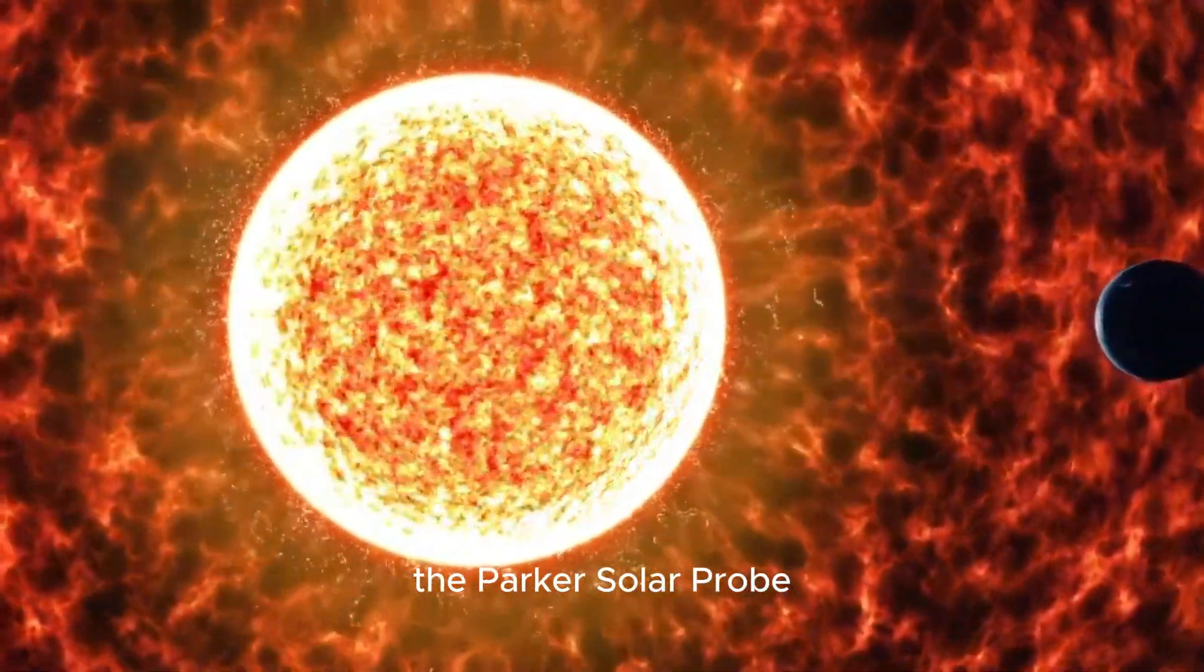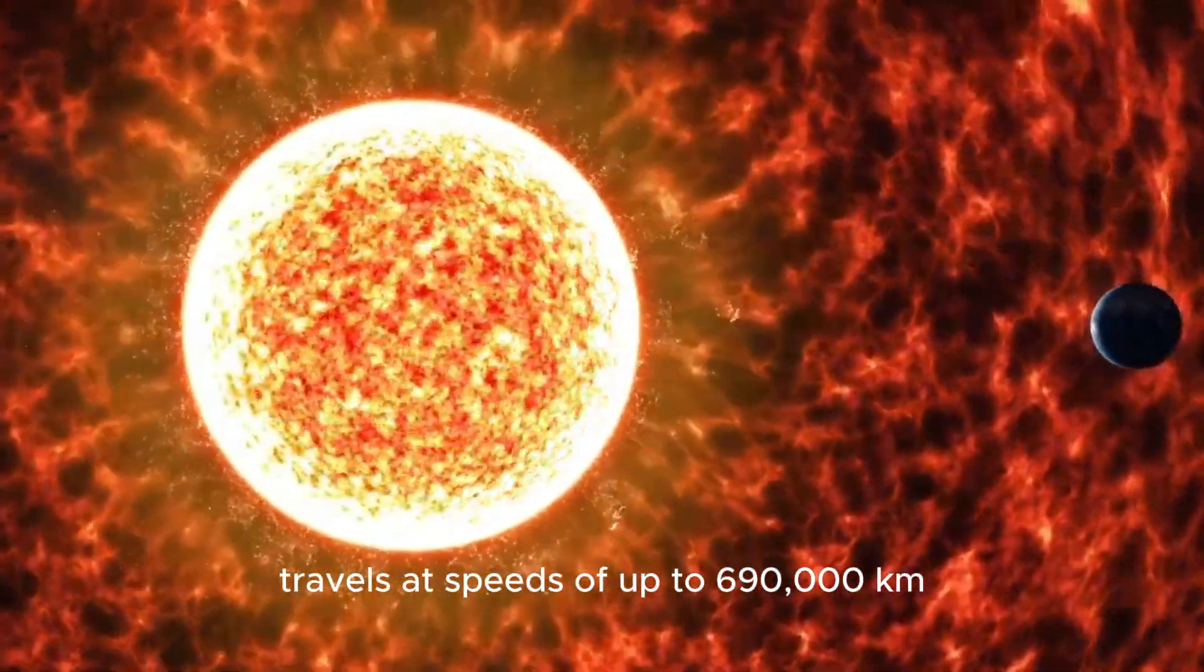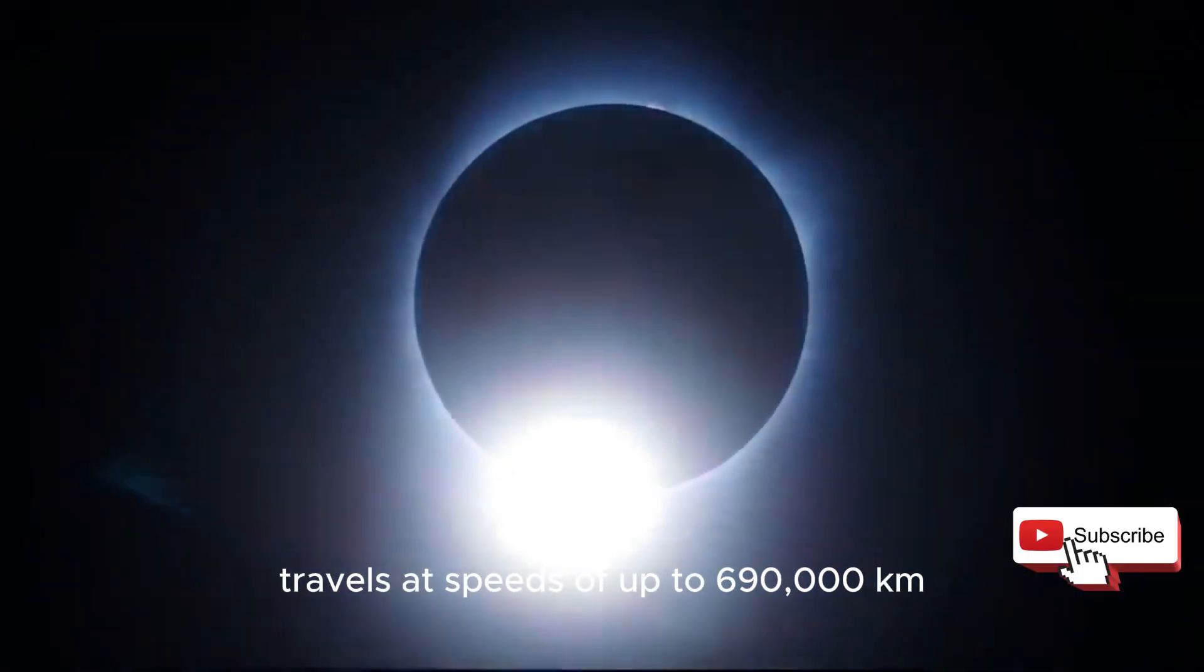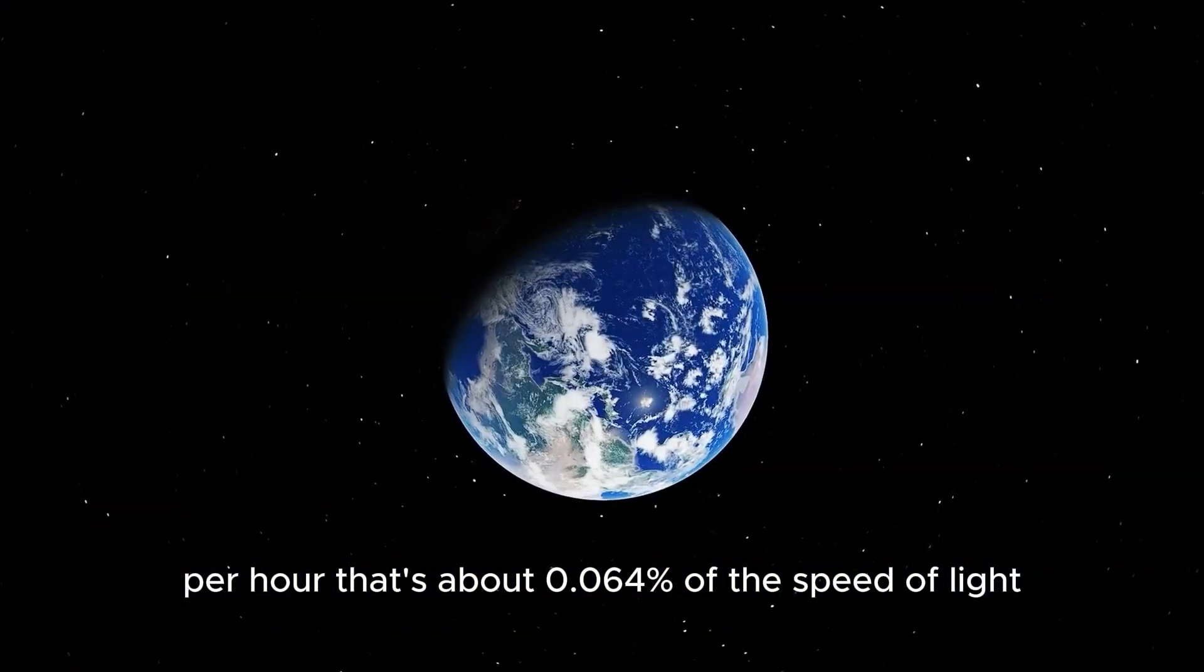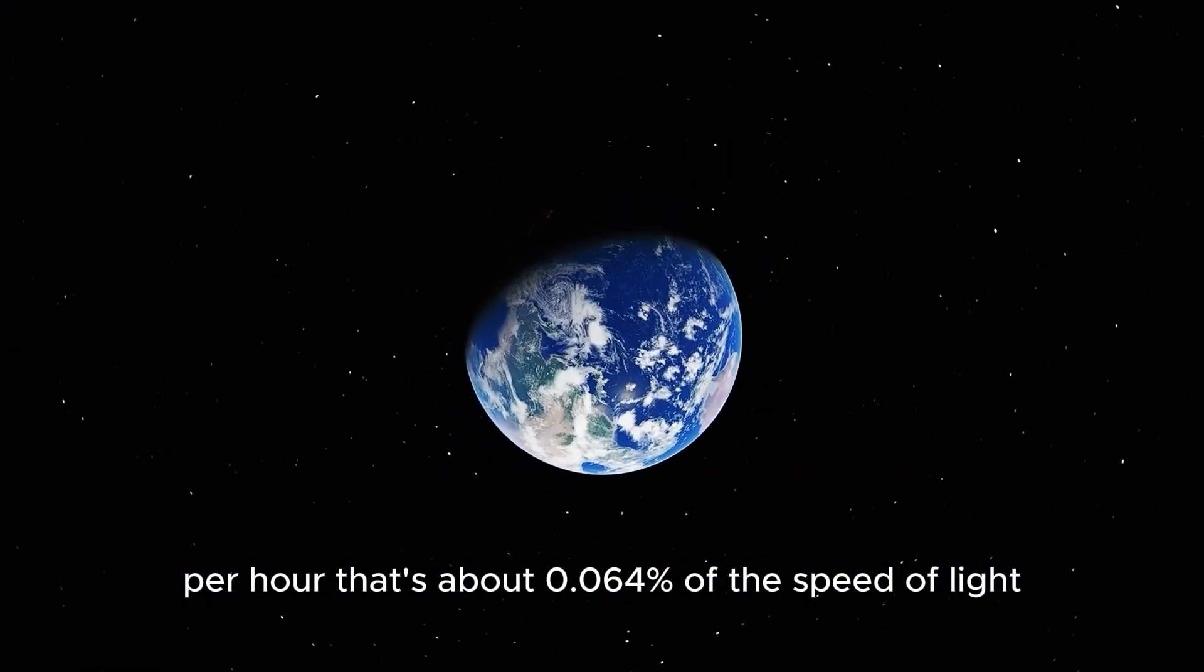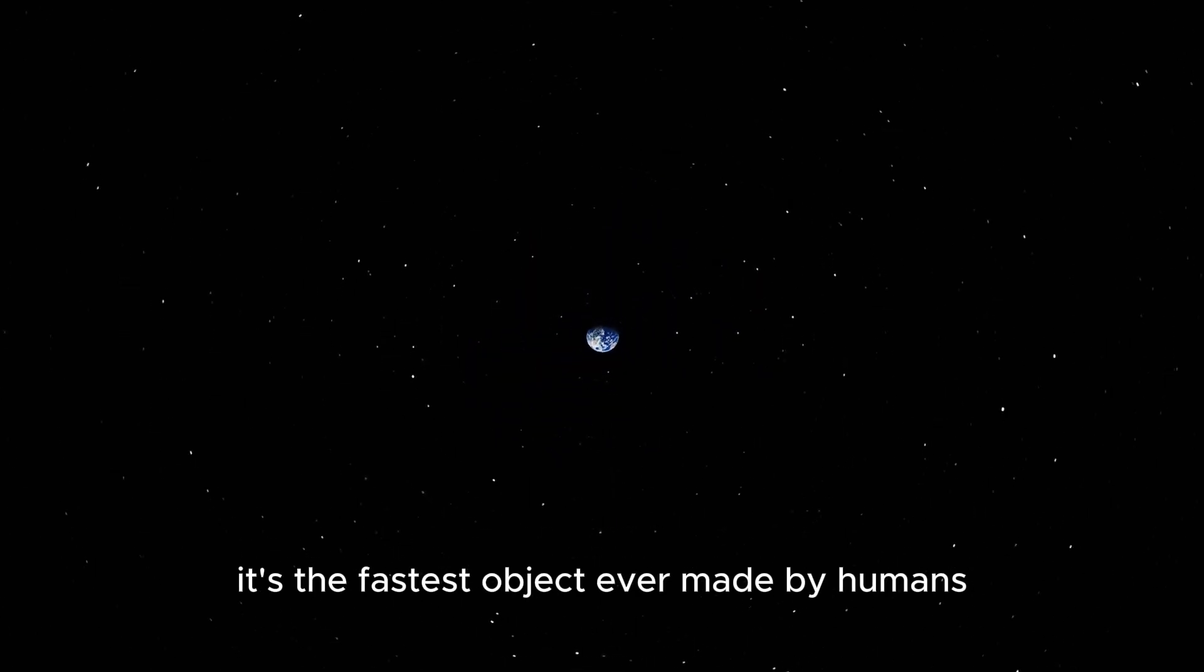And get this, the Parker Solar Probe travels at speeds of up to 690,000 kilometers per hour. That's about 0.064% of the speed of light. It's the fastest object ever made by humans.